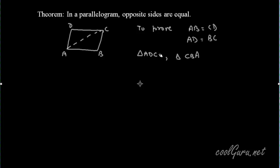First we will prove that these two triangles are congruent, ADC and CBA. First, angle DAC is equal to angle ACB. These are a pair of alternate angles. This angle is equal to this because AD is parallel to BC as it is a parallelogram. Then AC is equal to AC. This side is common to both the triangles.